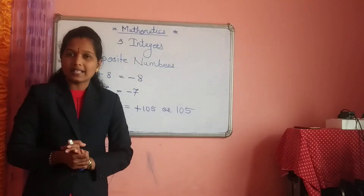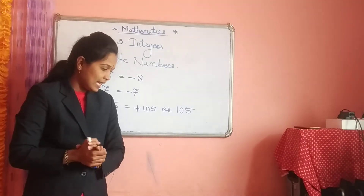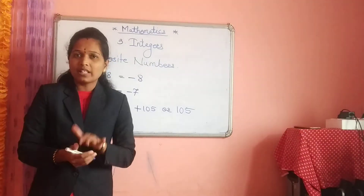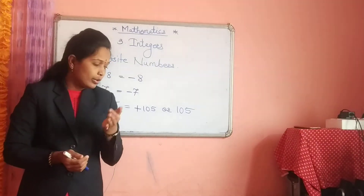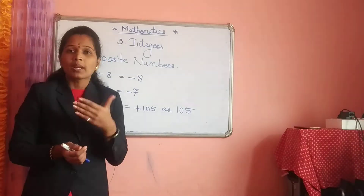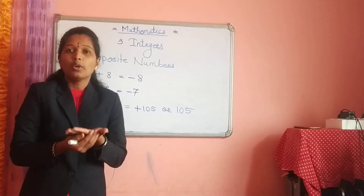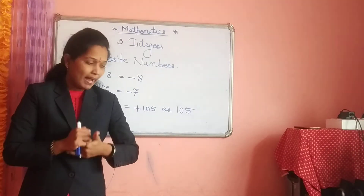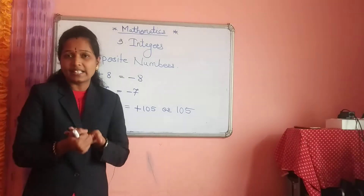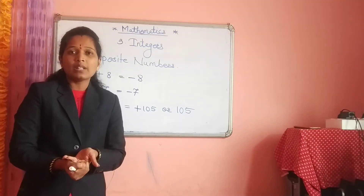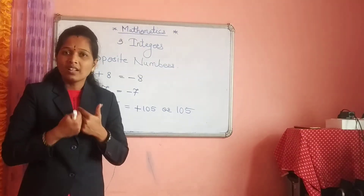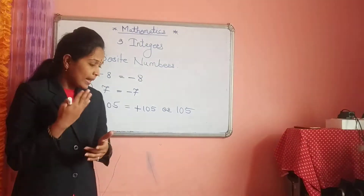Practice set number 6 is very easy. Numbers are given: 47 — it is positive, so you write down minus 47. Plus 52 — you write down minus 52. Minus 33 — it is a negative number, so you write down plus 33.